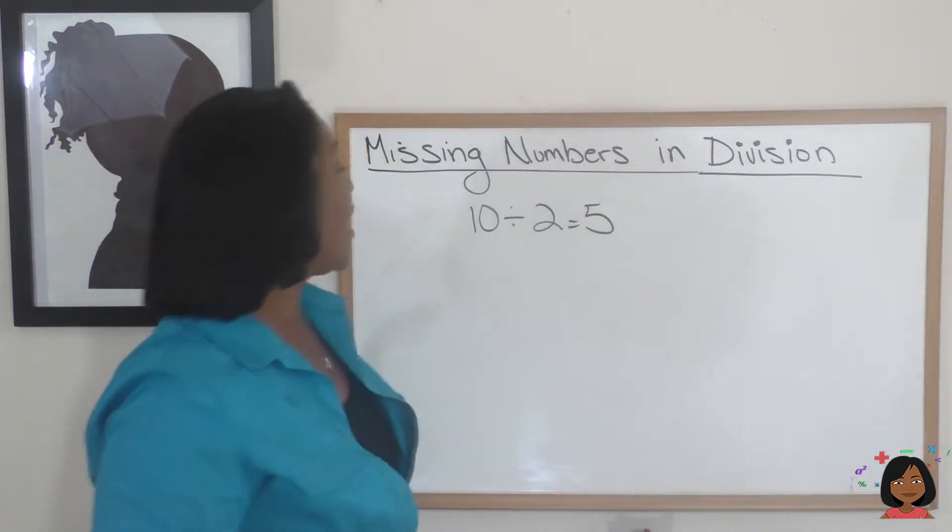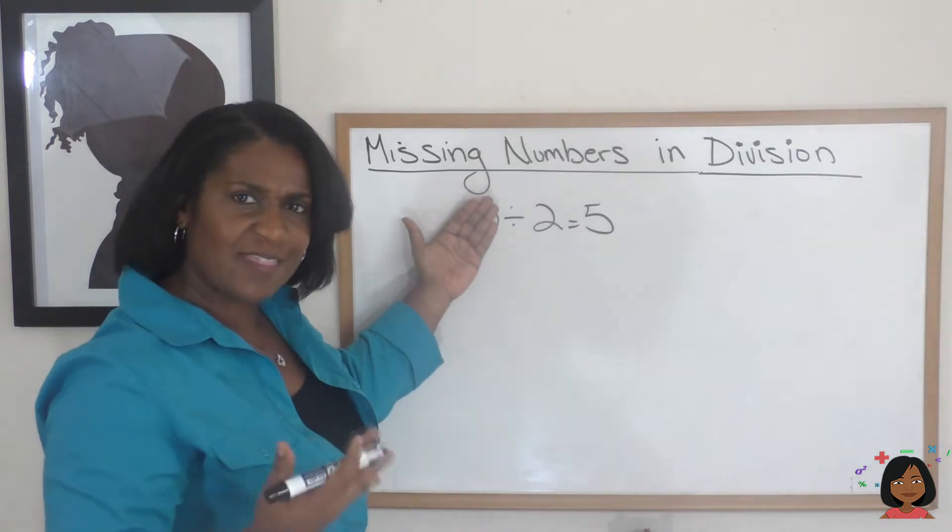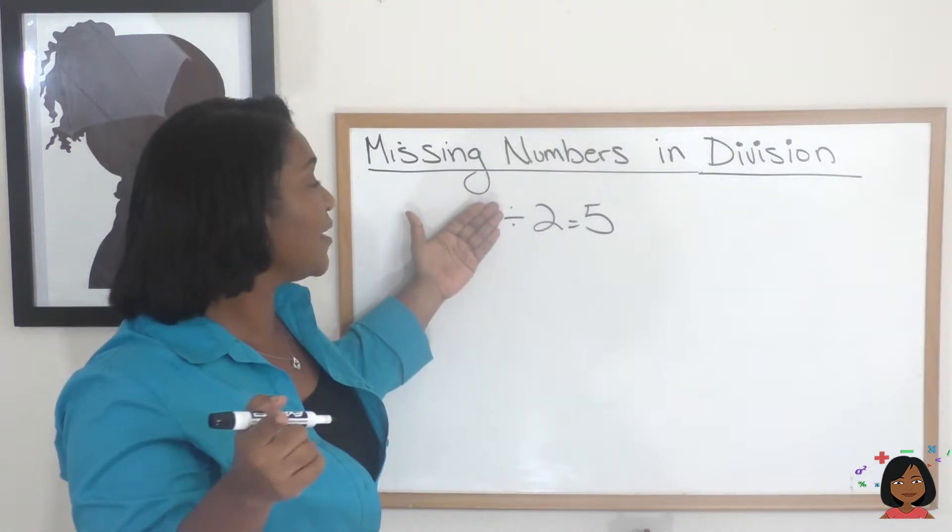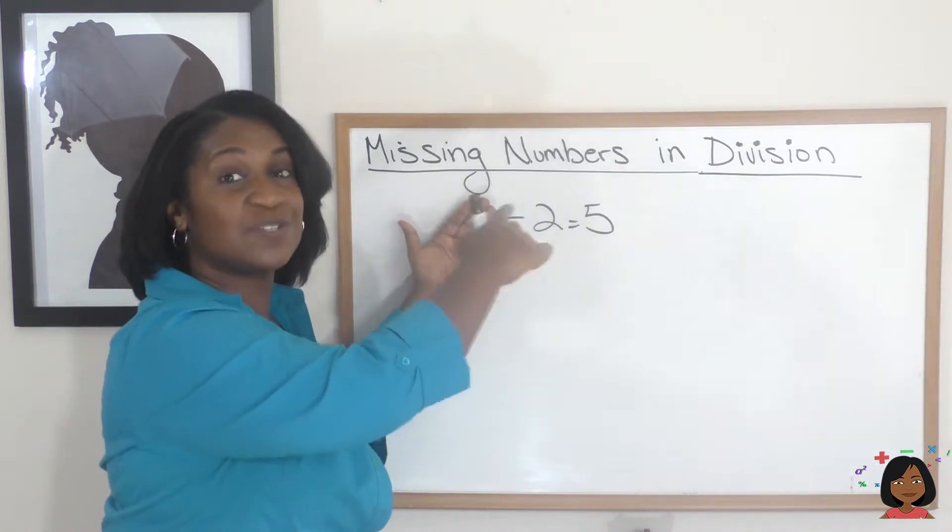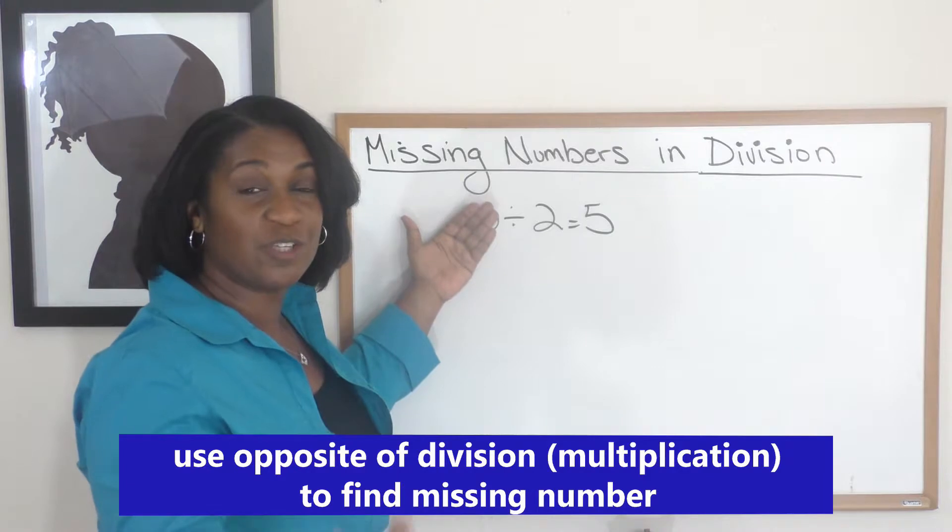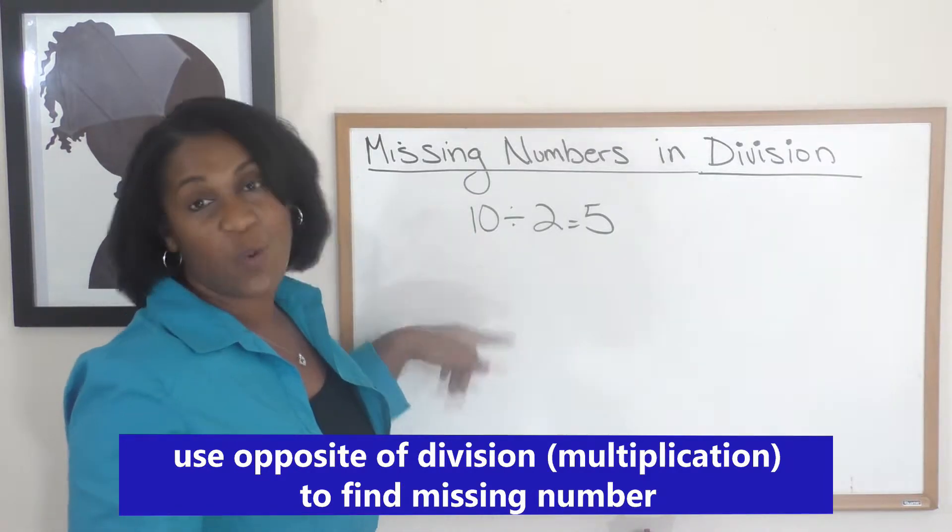If I want to cover up the 10, how would I go ahead and find that number using the two numbers that I have? I know that you can see that 5 times 2 is 10, so we can use the opposite—we can use multiplication to help us find our missing number.